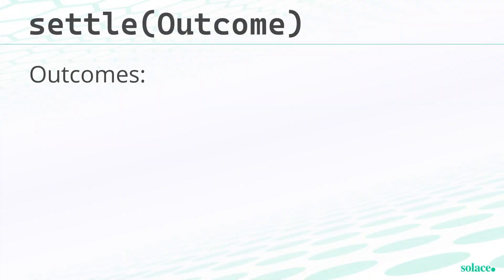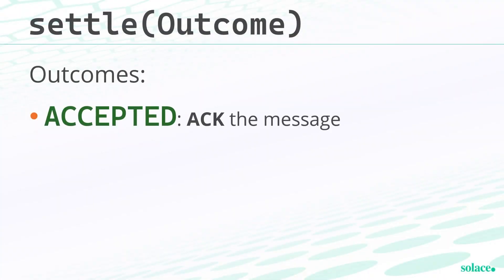We're almost at feature parity, so by the time you see this video, hopefully every single API will have it. And that is using a new method called settle on the message. Settle takes an argument of an outcome, and outcomes can have one of three choices. The first is accepted, which is essentially an ACK or a successful acknowledgement.